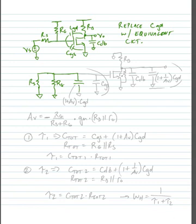Here we have two capacitors at the input now. We have the original Cgs, and we have a capacitor that's equal to 1 plus Av, the voltage gain of our transistor, times Cgd.